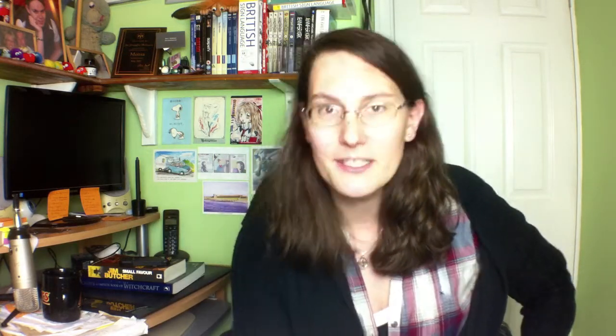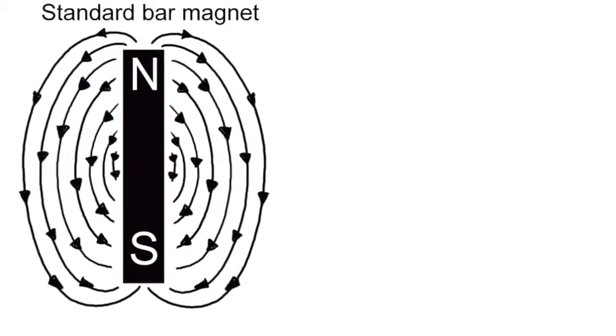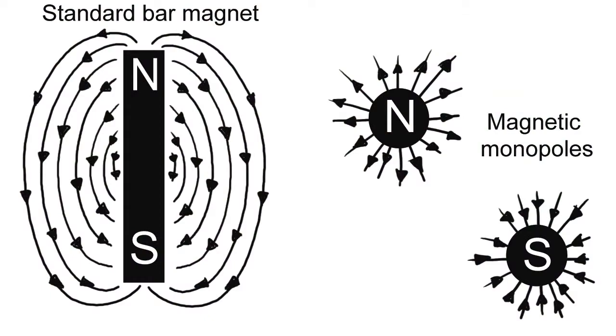Quick scenery change because someone tried to film me in the middle of recording. Last but not least — number five: magnetic monopoles. Have you ever had a magnet, noticed it has a north and a south, tried to cut it in half to get one that's just north and one that's just south — and found that you just got two smaller magnets of the same style as the original? Well, scientists have asked: why can't we have a magnet that's all north or all south? That's what a magnetic monopole would be. No one has ever found a naturally occurring particle that is just north or just south, and that's Nobel Prize territory.